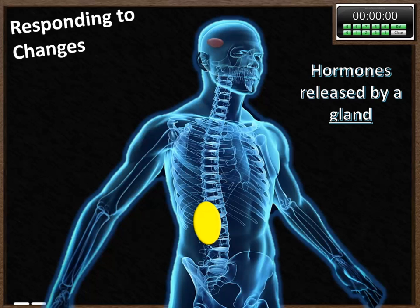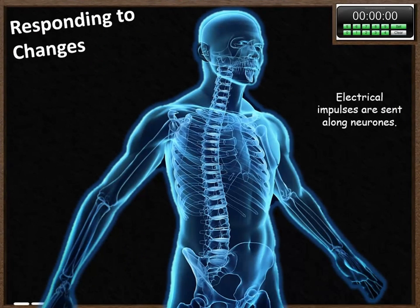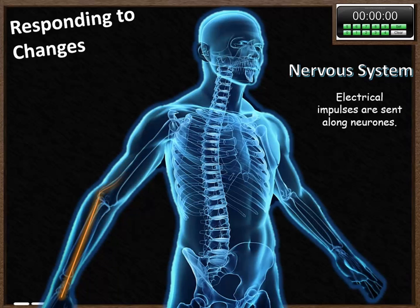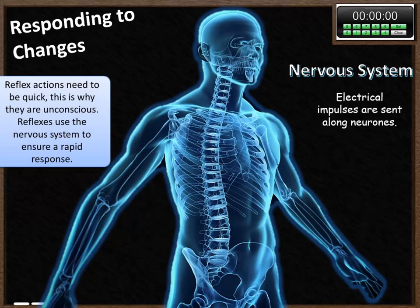So we need another way of responding to change, and that happens through the nervous system. What's involved is electrical impulses being sent along neurons. These are incredibly quick because they're electrical signals, allowing a change to be made very quickly. Reflex actions need to be quick — that's why they're unconscious. They're there to help us survive, and reflexes use the nervous system to ensure we get this rapid response.